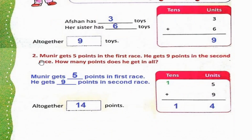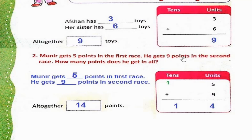Question number 2: Munir gets 5 points in the first race. He gets 9 points in the second race. How many points does he get in all? Munir کو first race میں 5 points ملتے ہیں اور second race میں 9 points۔ Now we have to find the total points.